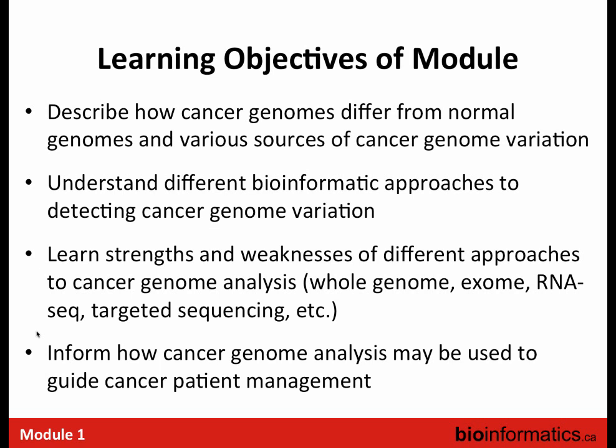The learning objectives are really focused on cancer genome analysis: what goes wrong in the cancer genome, how can it go wrong, how can we detect it, and really thinking carefully about the different bioinformatic approaches to detecting — in some cases — the exact same type of cancer genome variation. Many ways to find mutations, many ways to find rearrangements. The first part of the talk gives a broad overview, and the last 30 minutes are a case study — a published report, probably the first example of using cancer genomics to manage a patient case — which we'll go through in a journal club style to put everything into practice, guiding patient management.